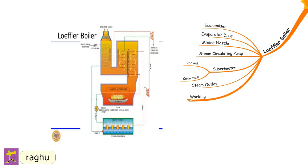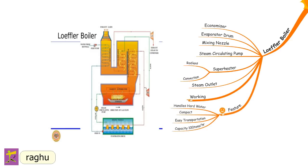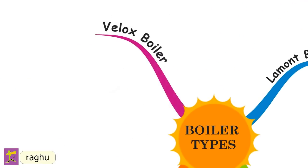In the working of the Loeffler boiler, the high-pressure feed pump draws water through the economizer and delivers it to the evaporating drum. The steam circulating pump draws saturated steam from the drum and passes it through radiant and convective superheaters. One-third of the superheated steam goes to the turbine; the remaining two-thirds passes through the water in the evaporating drum to evaporate the feed water. Features: it handles high salt concentrations, is more compact, allows easy transportation, has a capacity of 100 tons/hr, and an operating pressure of 140 bar.